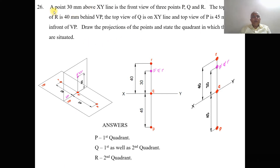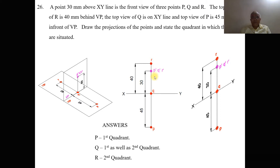A point 30 mm above the XY line is the front view of three points. So you have an XY line, and from here you measure 30 mm and mark this as the front view of three points: capital P, capital Q, and capital R. Therefore you are going to get P dash, Q dash, and R dash.